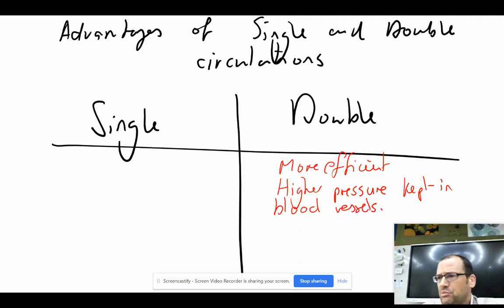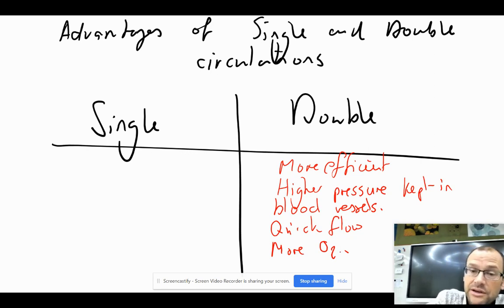Blood is transported quicker, so we can get - if we have quick flow - more O2 transported. So double circulation: more efficient because it's quicker, higher pressure, more oxygen supplied, more CO2 excreted at the same time.